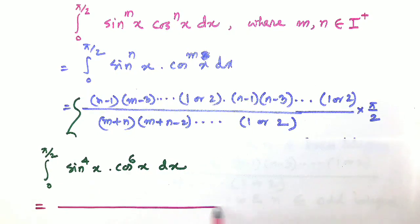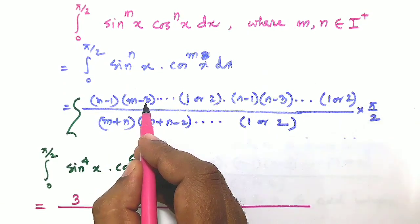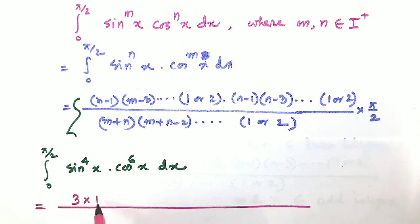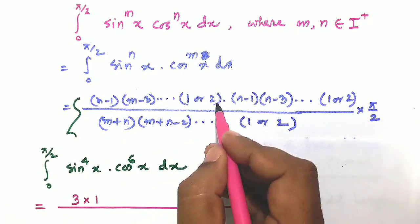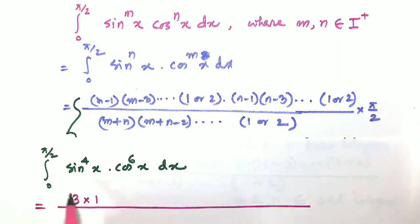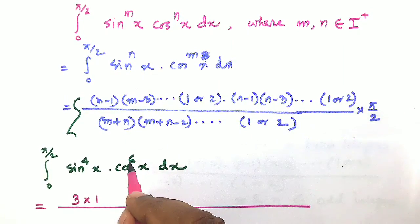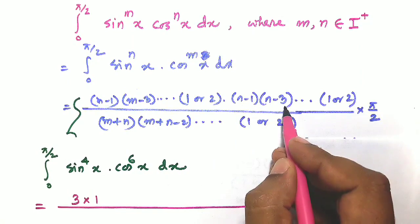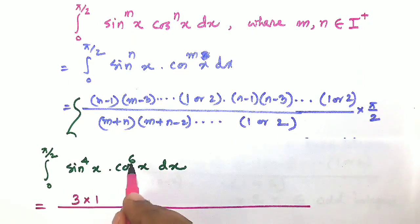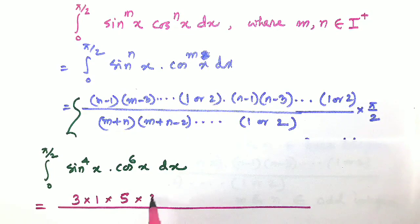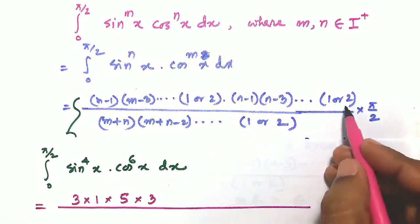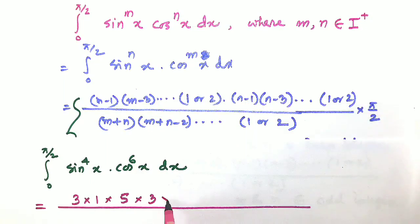For the numerator with m equal to 4: we compute m minus 1 = 3, then m minus 3 = 1, and we stop since we've reached 1. For n equal to 6: we compute n minus 1 = 5, n minus 3 = 3, n minus 5 = 1. So the numerator gives us 3 into 1 into 5 into 3 into 1.